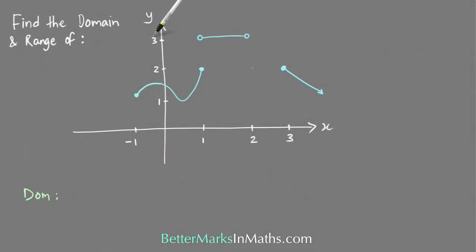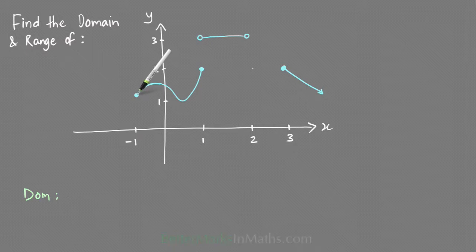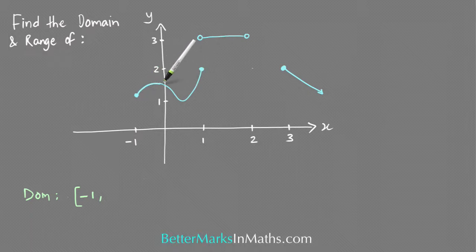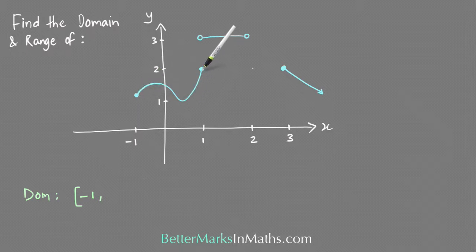In this question you have to find the domain and range of this graph. To figure out the domain you need to figure out what x values belong to the graph. Starting on the left-hand end at this point, the x value there is -1, and because that circle is colored in, that point is included. Starting from -1 with a square bracket, traveling along the graph, x values are between -1 and 1, and 1 is included because that circle is colored in. So the set of x values for that part of the graph is from -1 to 1.